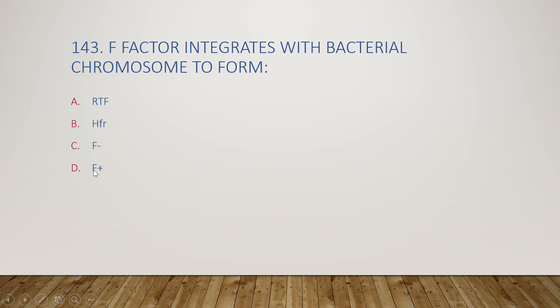The next question: F factor integrates with the bacterial chromosome to form RTF, HRF, HFR, F-minus, or F-plus? The right answer is option B, HFR — that is high frequency recombination.